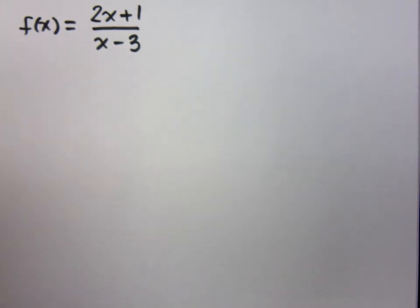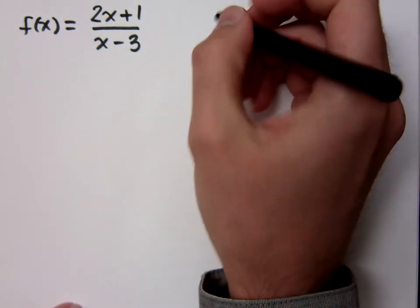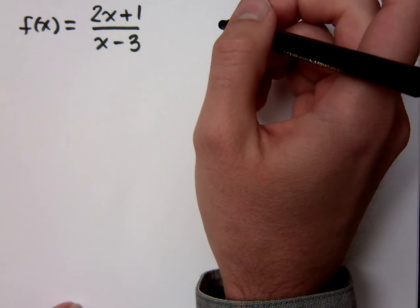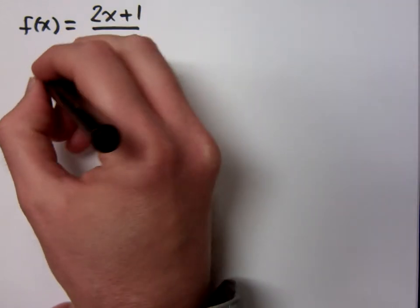I want us to look at this rational function. We're going to assume that all the conversations that happen between videos never happen. Now when I look at this guy, he's set up in that p of x over q of x form. I want you to tell me everything you know about this guy. I'm going to start with the easy stuff. You've got to start with the easy part.